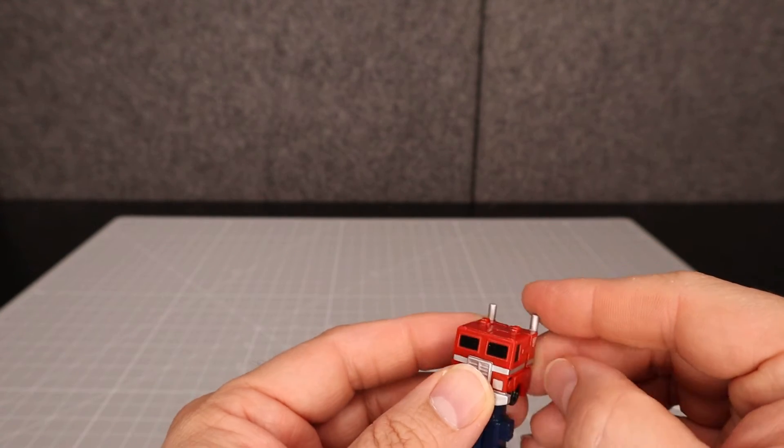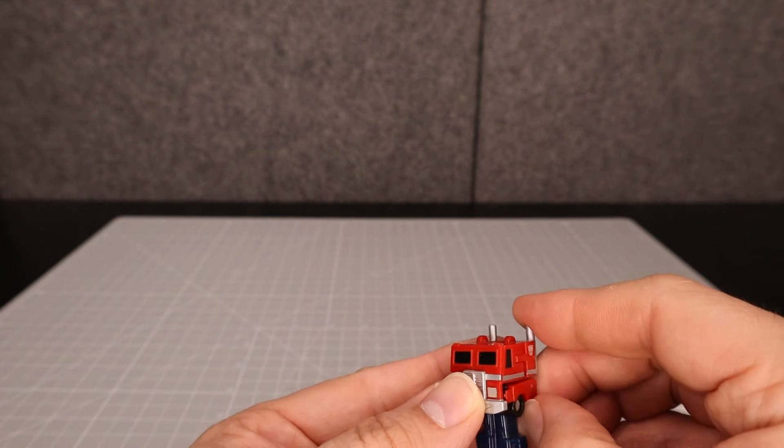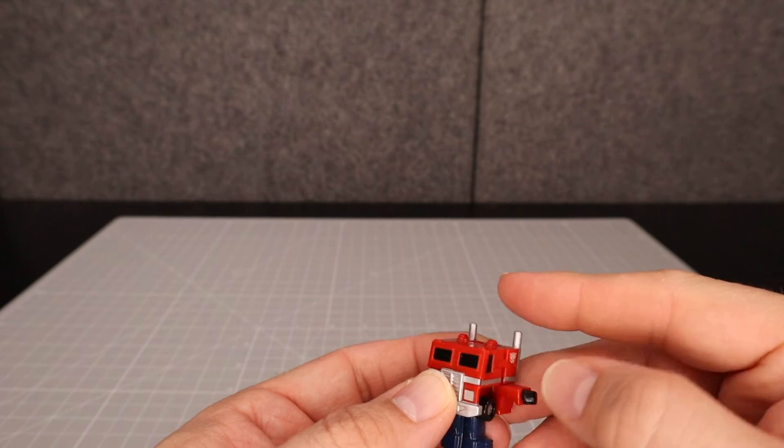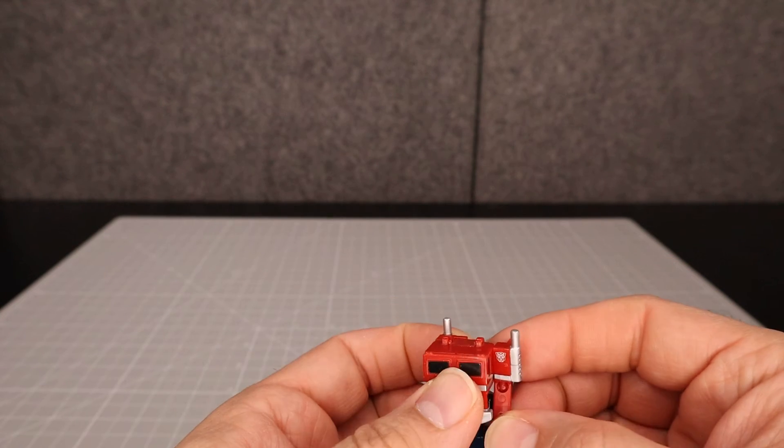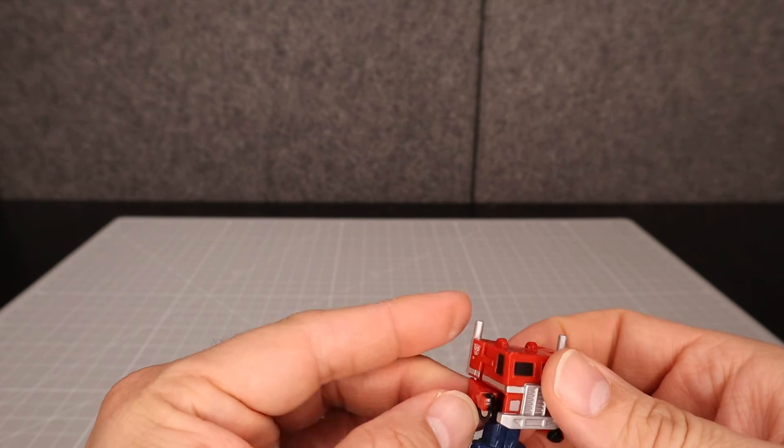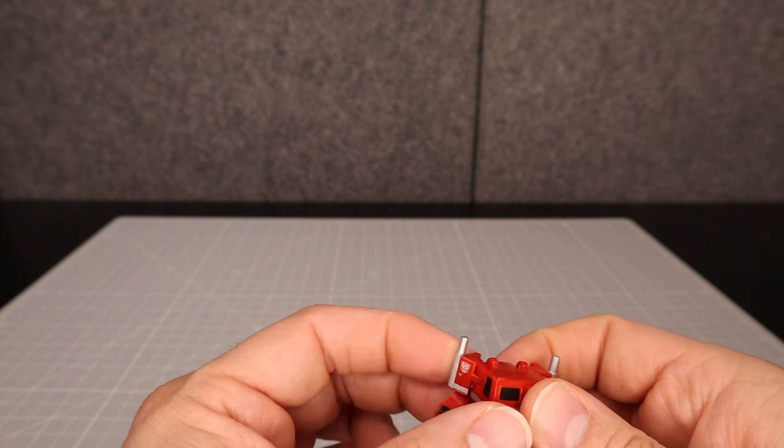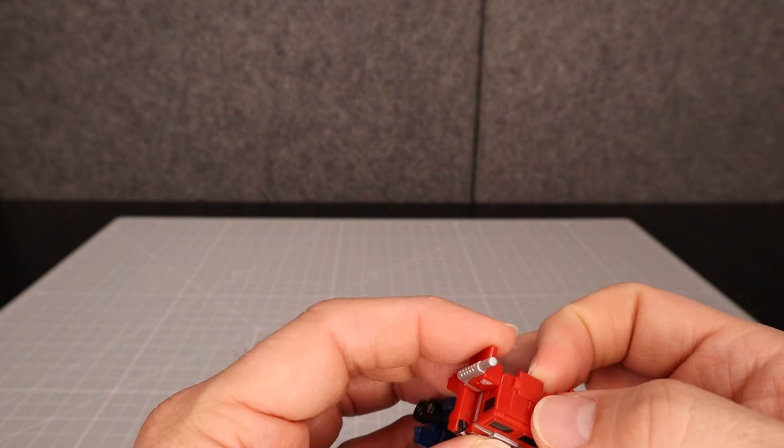And then we'll pull out the arms, so it's just very much like its G1 counterpart. You'll see the wrists are right there, and then you bring that out. Same thing on the other side. There we go. And then you flip the head out.